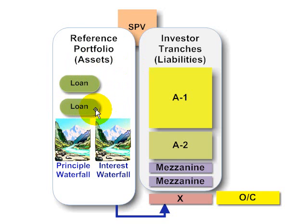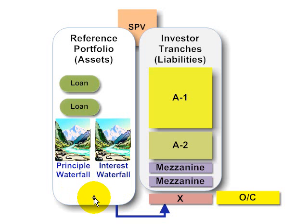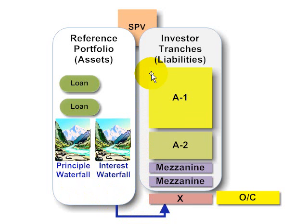If we think about mortgage loans, they pay principal and interest on a monthly basis. So in terms of the portfolio, we speak of a principal cash flow waterfall and an interest cash flow waterfall. These waterfalls are the cash flow being generated by the credit-sensitive assets. So much of the work around structuring the securitization is about creating the rules as to how these cash flow waterfalls are divided and distributed amongst the investors.